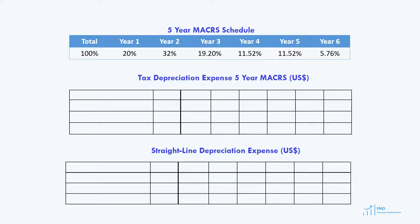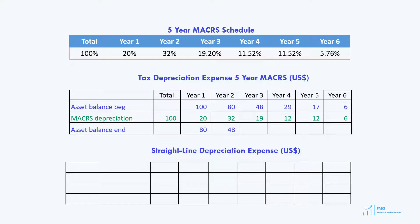Let's review an example of the MACRS application. Suppose that the asset's opening balance is 100. According to MACRS, we are allowed to depreciate 20% of the asset in the first year, giving us depreciation expense for tax purposes of 20. In the second year, we are allowed to depreciate 32% of the asset's initial value of 100, giving us 32. We continue our calculations, and you can see that at the end of year 6, the balance goes to 0.